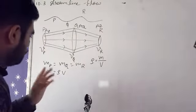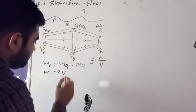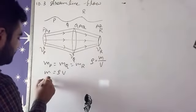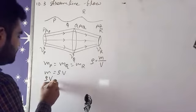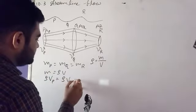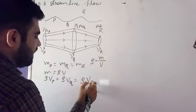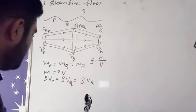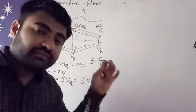Here, we know the density formula: mass upon volume, so mass equals density into volume. Density is constant all over, so rho as it is, but volumes are different.